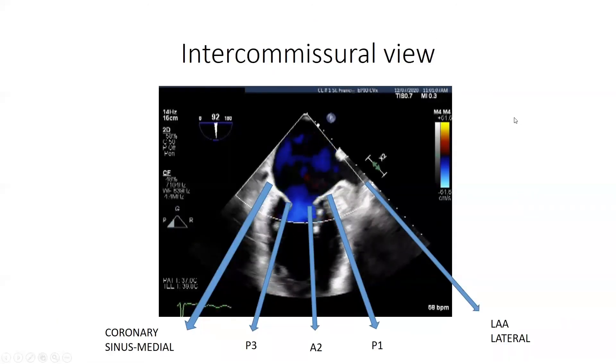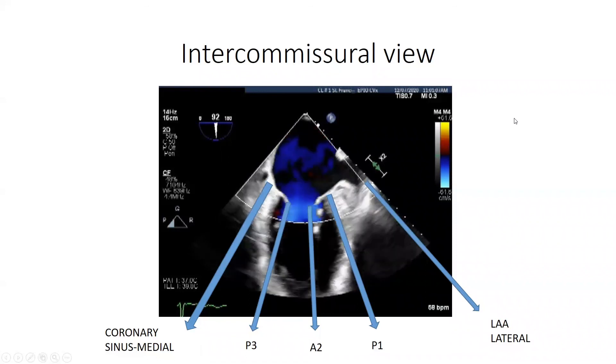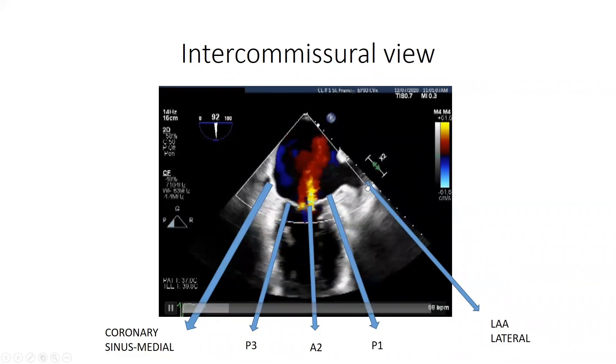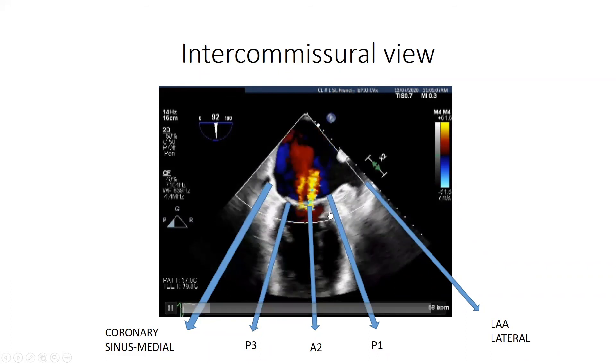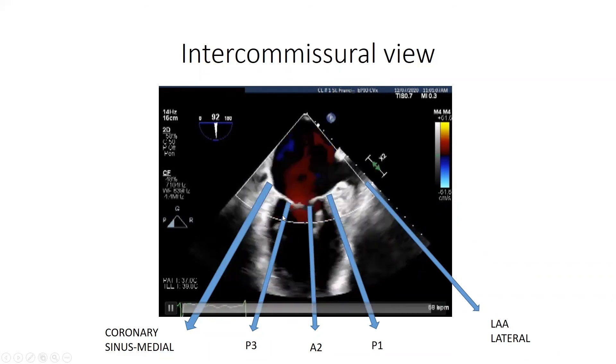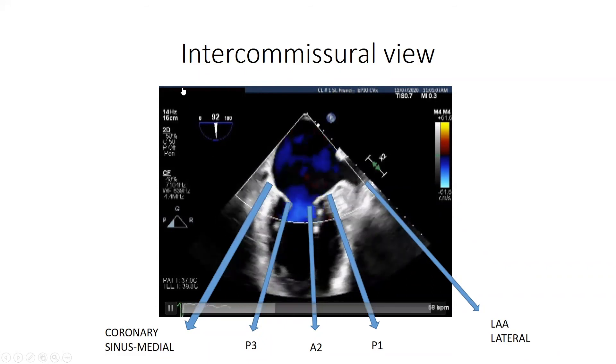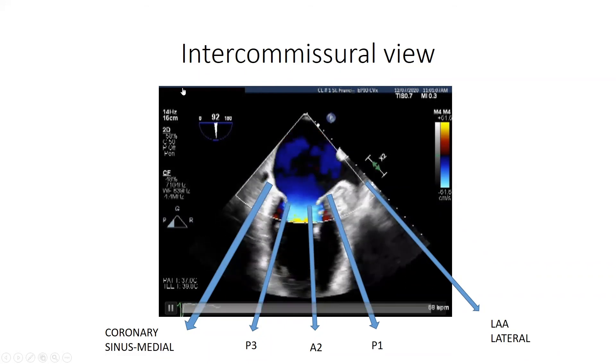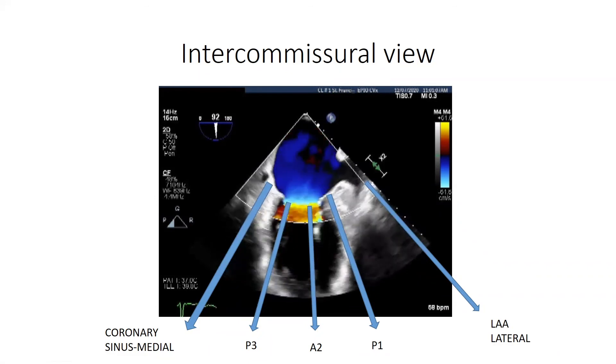Furthermore, we can use our intercommissural view, where the most lateral aspect is the left atrial appendage, followed by P1 with A2 in the middle and P3 being the most medial leaflet. This intercommissural view can help us localize the mitral pathology very quickly, easily, and accurately.